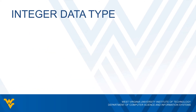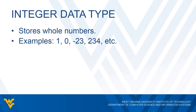We'll first take a look at the integer data type. Just like any other programming language, integers in Visual Basic store whole numbers. So we can have one, zero, negative integers like negative 23, or 234 — a wide range of whole number values. Whenever we create an integer variable in Visual Basic, unlike some programming languages, there is a default value associated with it. In this case, the default value is zero. So if you don't initialize a variable, you will be given zero by default.